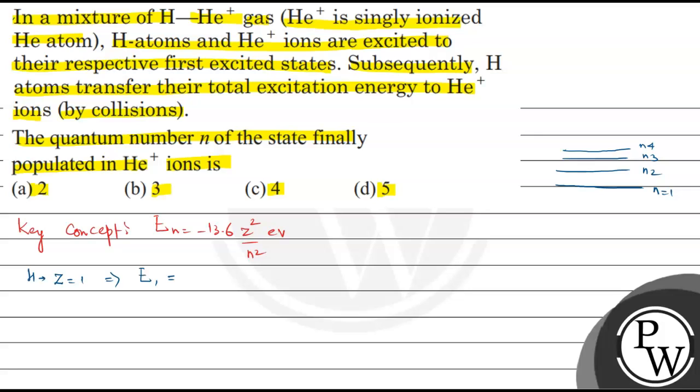For hydrogen, E2 is minus 13.6, Z is 1, N is 2 square. When we calculate this, it is minus 3.4 electron volt. Now hydrogen atom transfers this energy to helium atom.